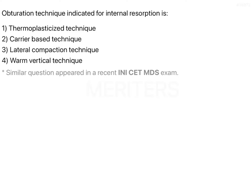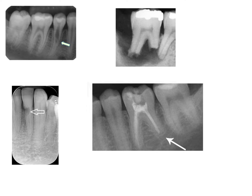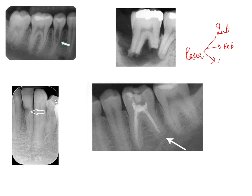The obturation technique indicated in internal resorption — before we look into the options and the answer, let's dive into the radiographic image and something about resorption patterns for teeth. Resorption in general can be classified into three types: internal, external, and replacement.